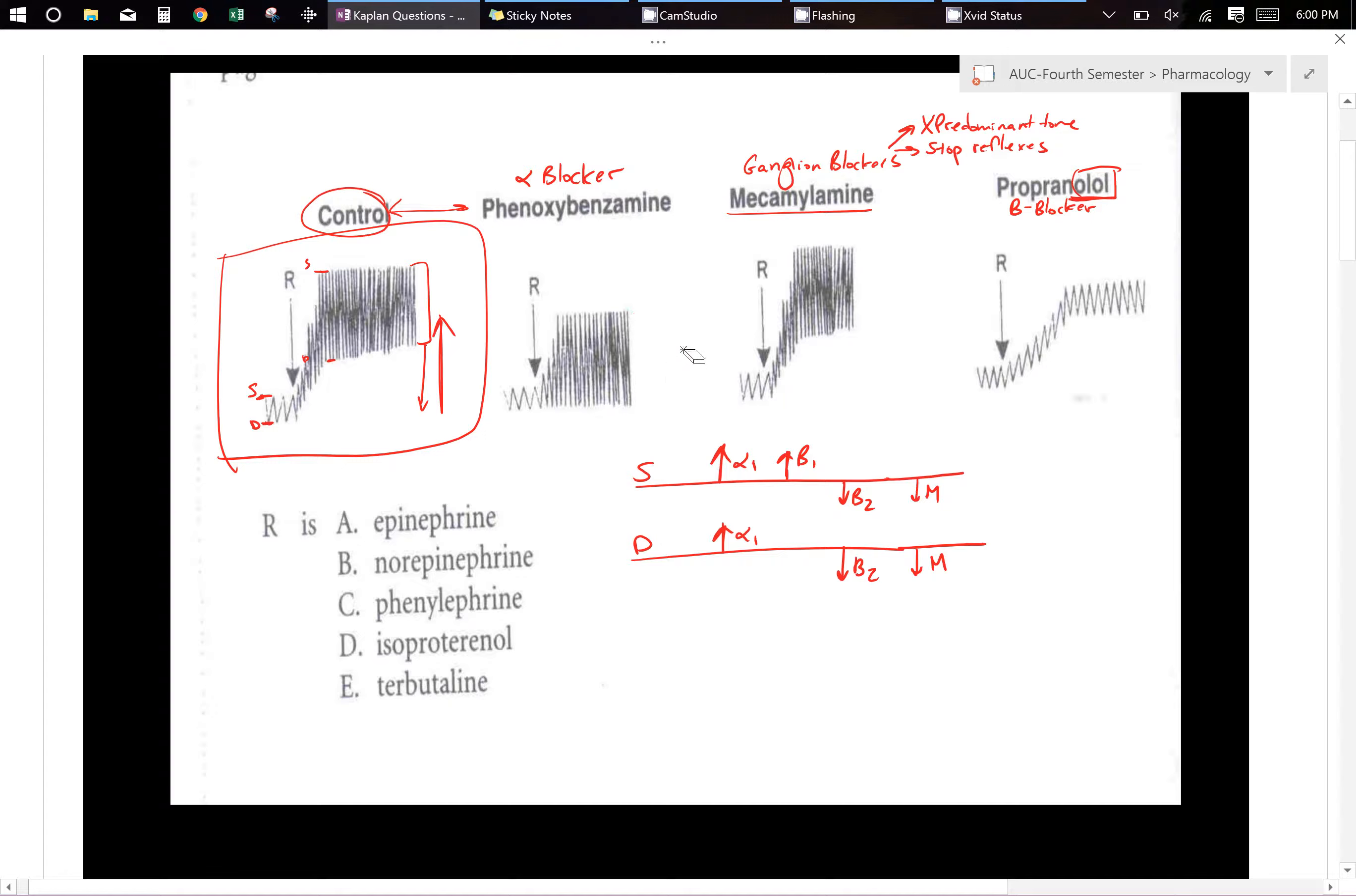So let's take a look. Epinephrine has alpha 1, beta 1, beta 2. Norepinephrine has alpha 1 and beta 1.